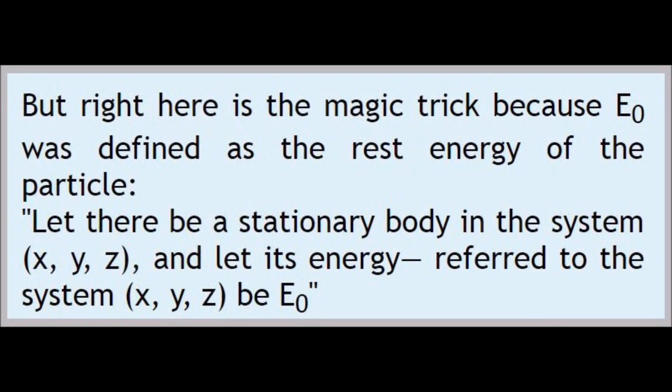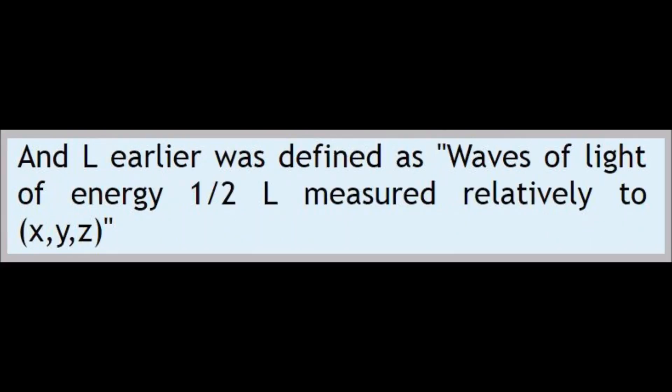But right there there is a magic trick, because E0 was defined as the rest energy of the particle. In these words it said: let there be a stationary body in the system XYZ and let its energy referred to the system XYZ be E0. And L earlier was defined as waves of light of energy one-half L measured relatively to XYZ.